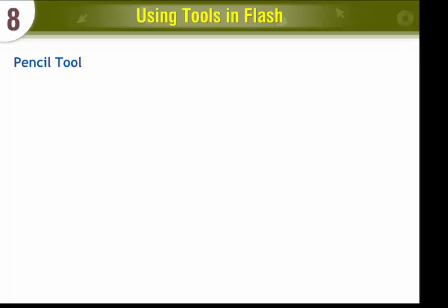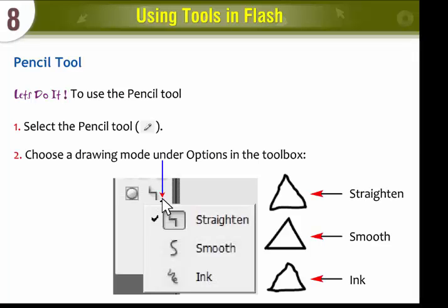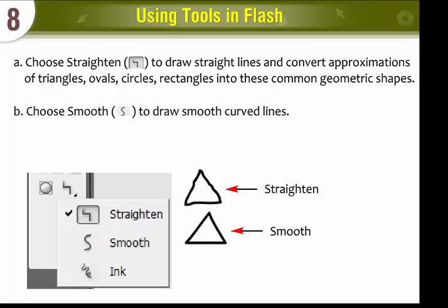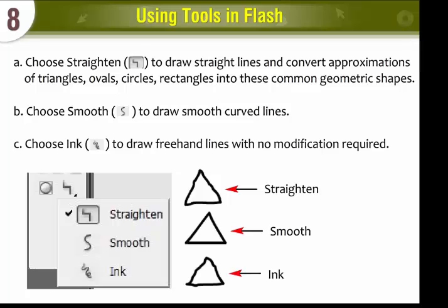Pencil Tool. To use the Pencil Tool, select the Pencil Tool and choose a Drawing Mode under Options in the Toolbox. Choose Straighten to draw straight lines and convert approximations of triangles, ovals, circles, and rectangles into common geometric shapes. Choose Smooth to draw smooth curved lines. Choose Ink to draw freehand lines with no modification required.